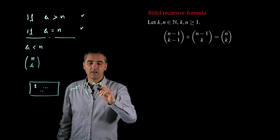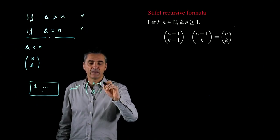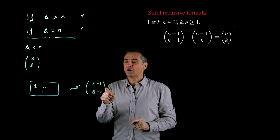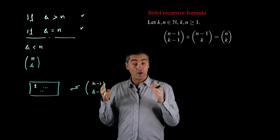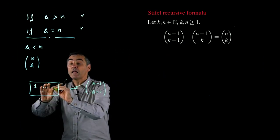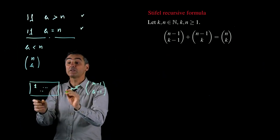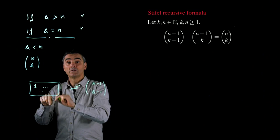Therefore, I have exactly the binomial n minus 1 over k minus 1 different ways to fill my box with k numbers with 1 also inside.